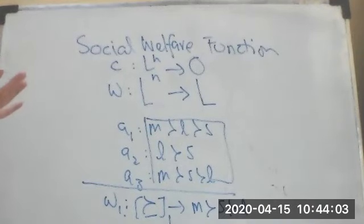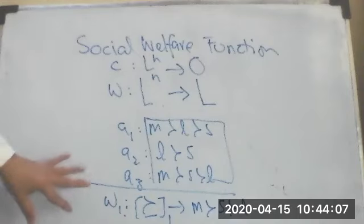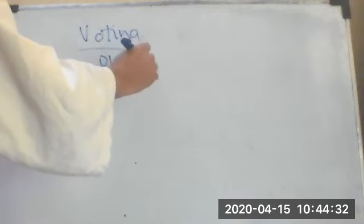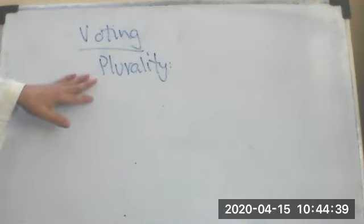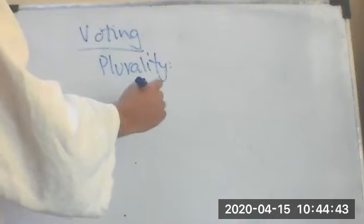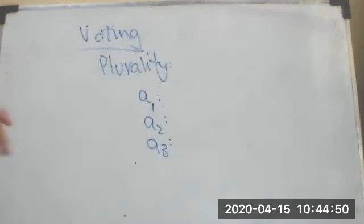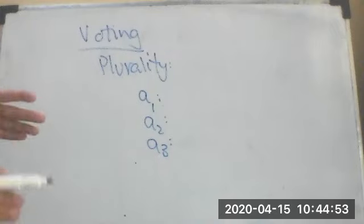This is the general framework required to examine voting as an example of computational social choice. There are many ways of voting — we will look at Condorcet and plurality, among others. In plurality voting, each voter casts exactly one vote, and the candidate with the most votes is selected as the winner.